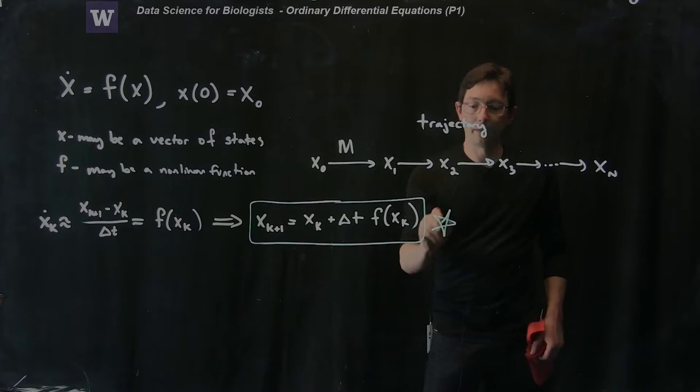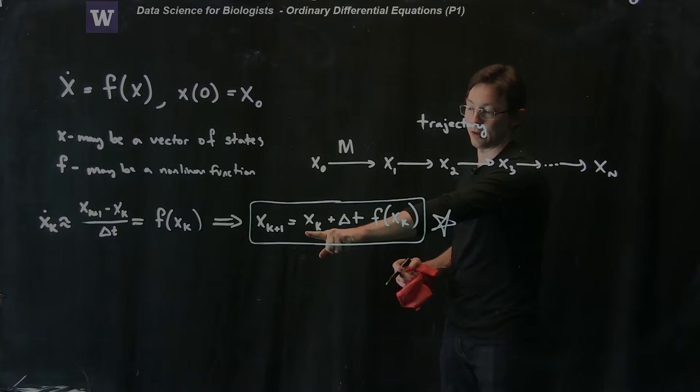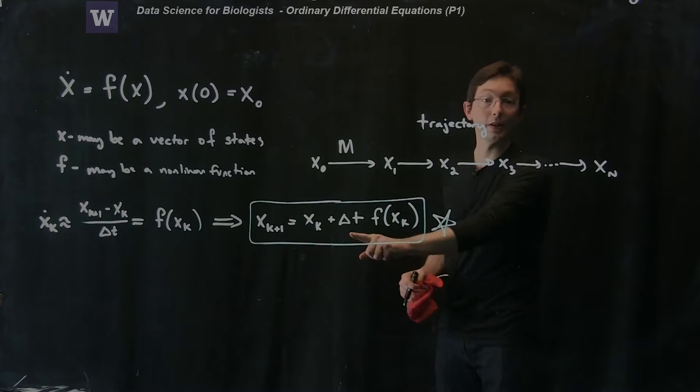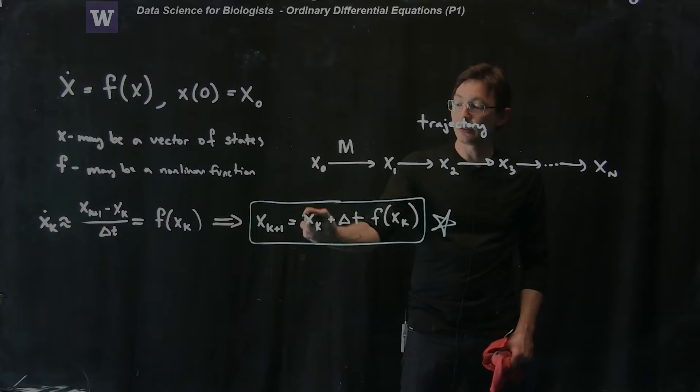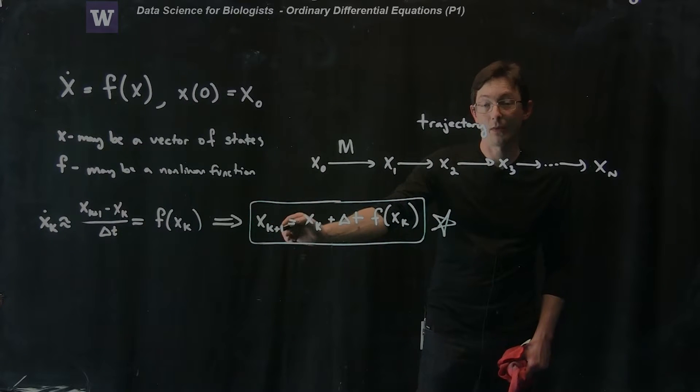And this is really, really important. So this means that if I have my state at time k, if I have x_k here and here and I know my function and I know delta t, then I can compute this entire right hand side and I can get my function, my vector x at time k plus 1.